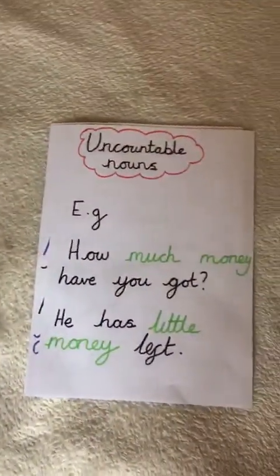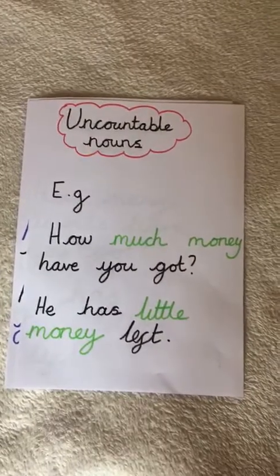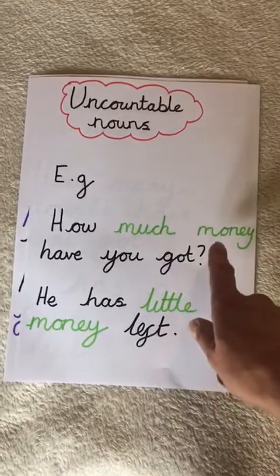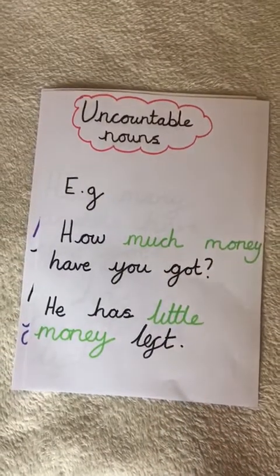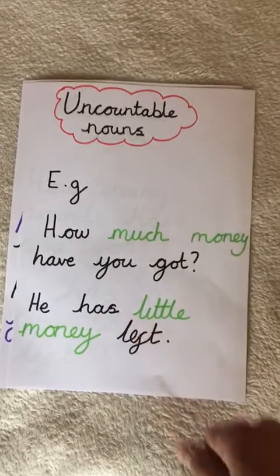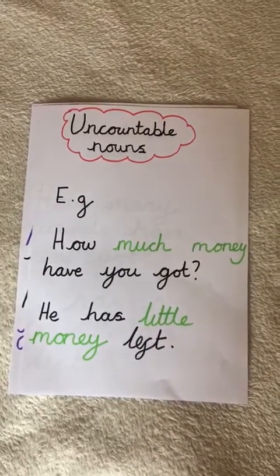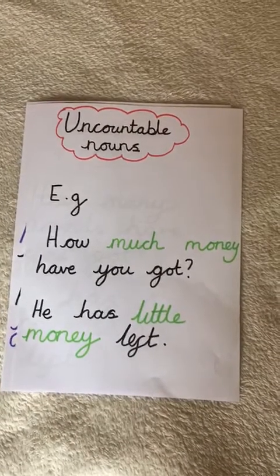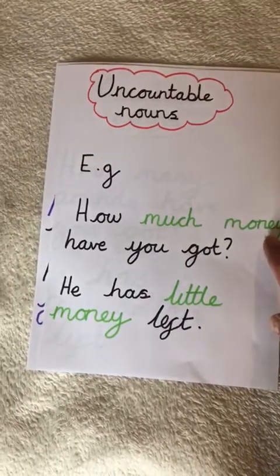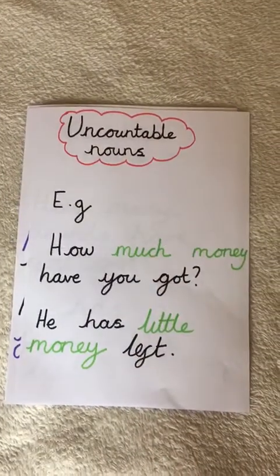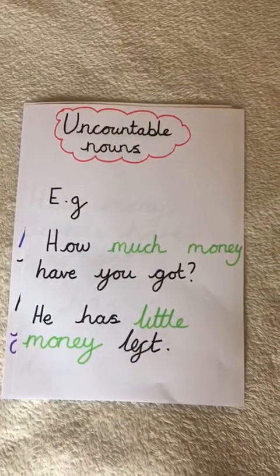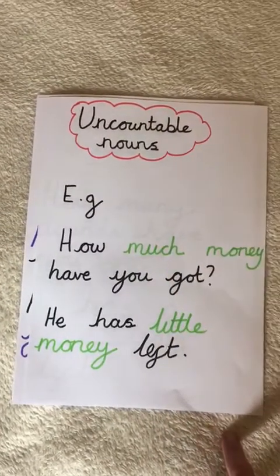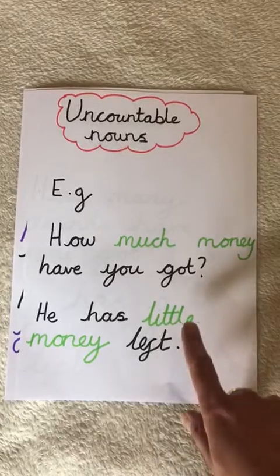So let's take a look at some quantifiers you can use with uncountable nouns. For example: 'How much money have you got?' and 'He has little money left.' Can you recognise the uncountable noun? The uncountable noun here is money. Can you recognise the quantifier? The quantifier in this sentence is 'much' and the quantifier in this sentence is 'little.'